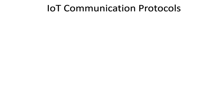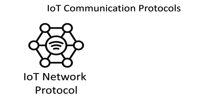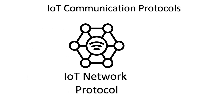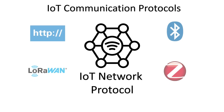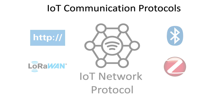IoT protocols are differentiated into two parts. The first one is IoT network protocols and the second one is IoT data protocols. IoT network protocols are designed to connect medium to high power devices over the network. IoT network protocols allow data communication within the scope of the network. HTTP, LoRaWAN, Bluetooth, and ZigBee are some examples of the popular IoT network protocols.